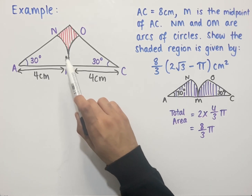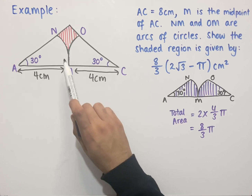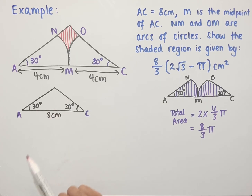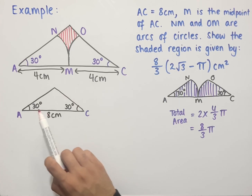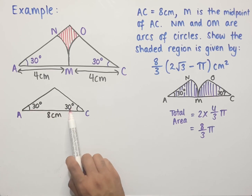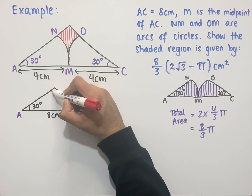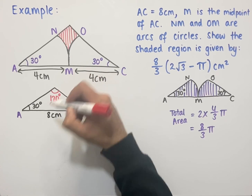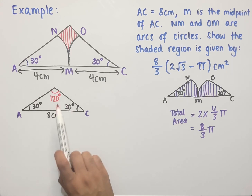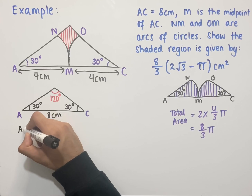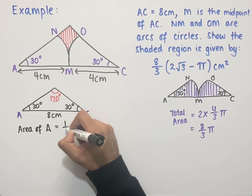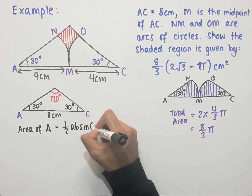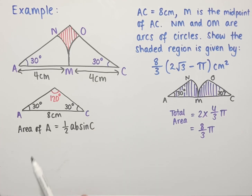Now let's work out the area of the isosceles triangle. The missing angle at the top can be found since angles in a triangle add up to 180 degrees: 180 minus 30 plus 30 gives 120 degrees at the top. Since this is not a right-angle triangle, we use the formula for area of a non-right-angle triangle: one half a b multiplied by sin C, where a and b are two side lengths and C is the angle in between.